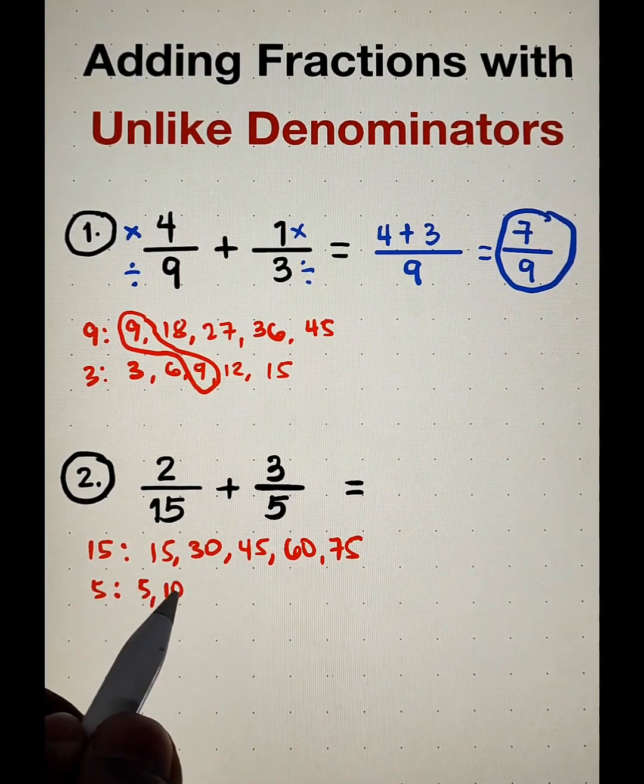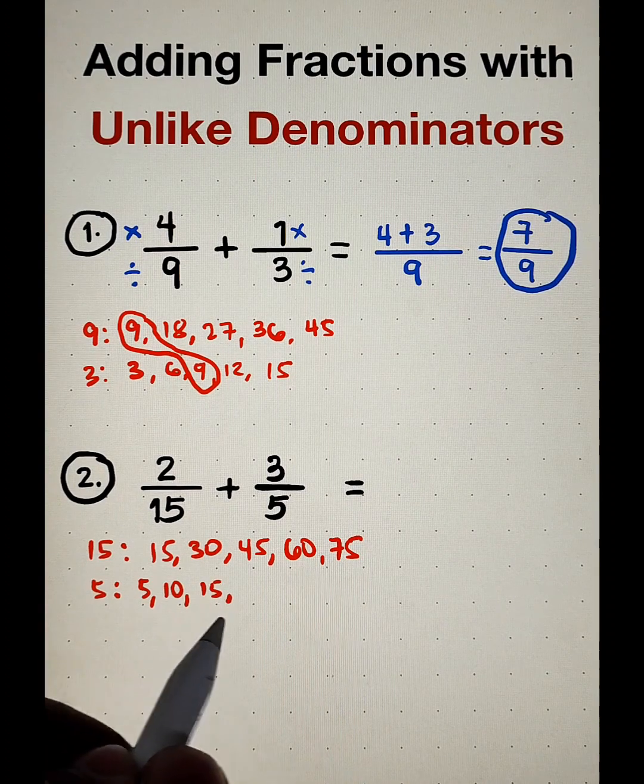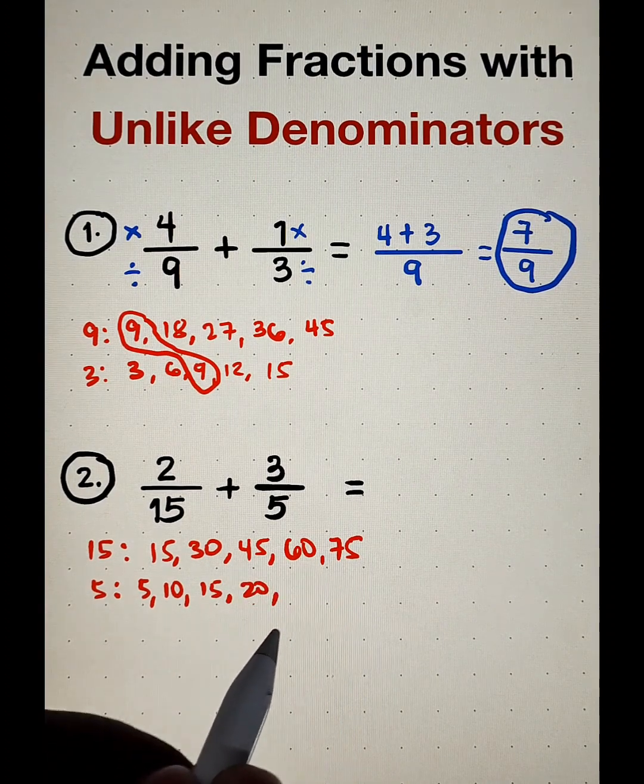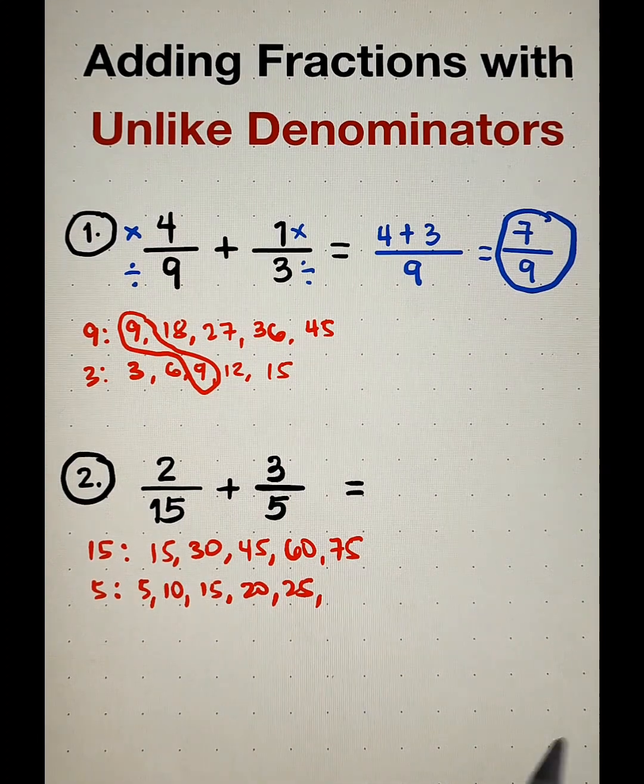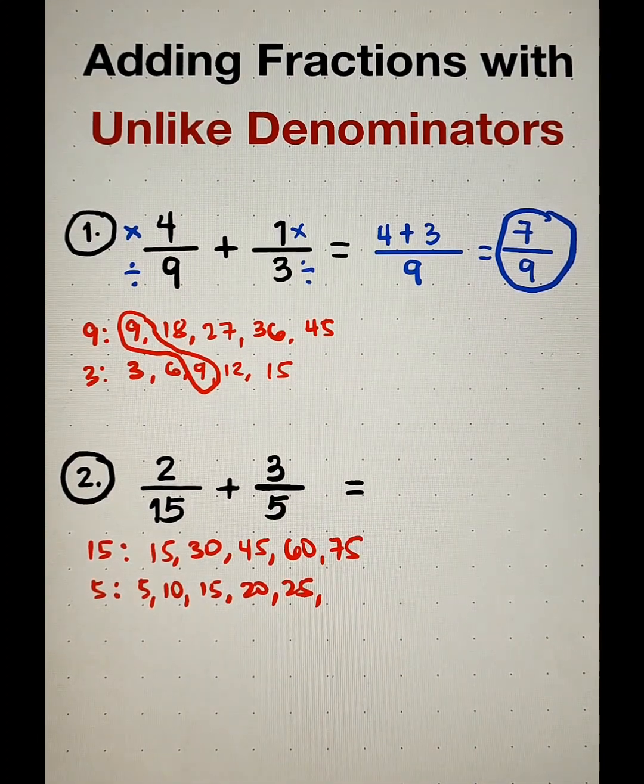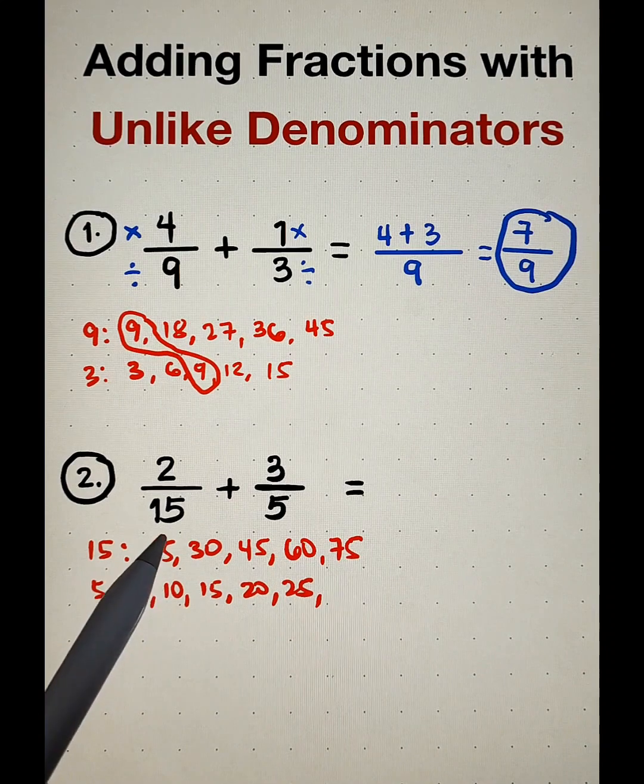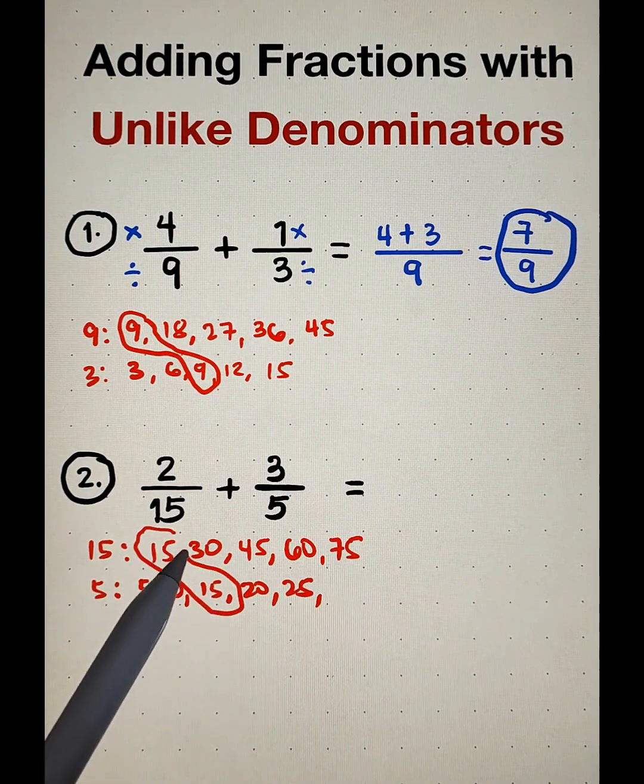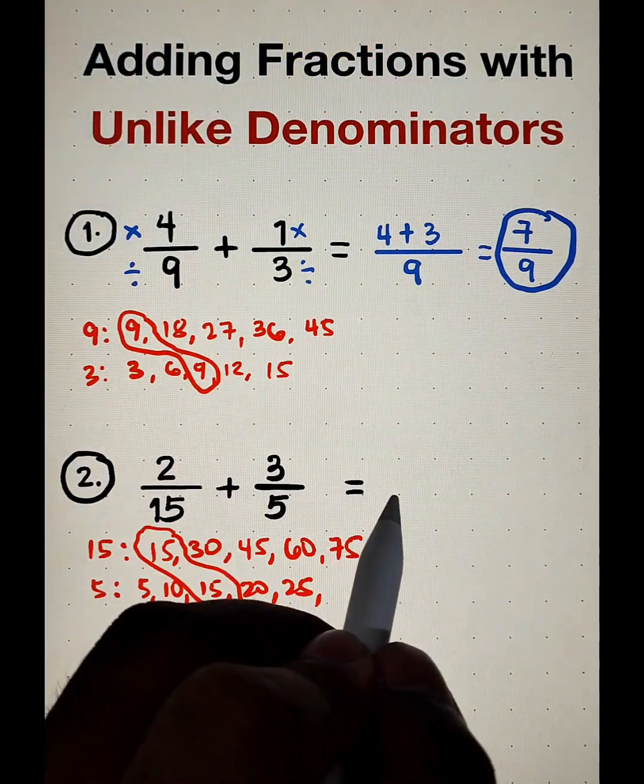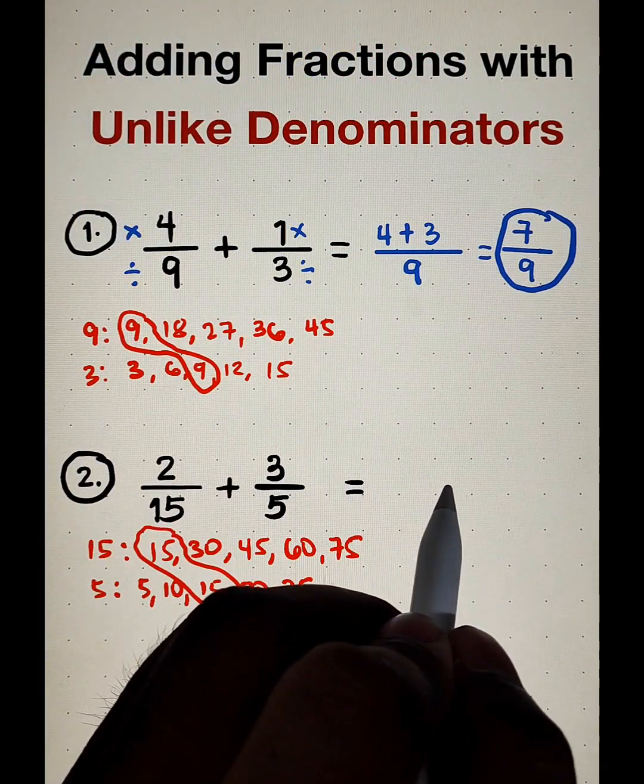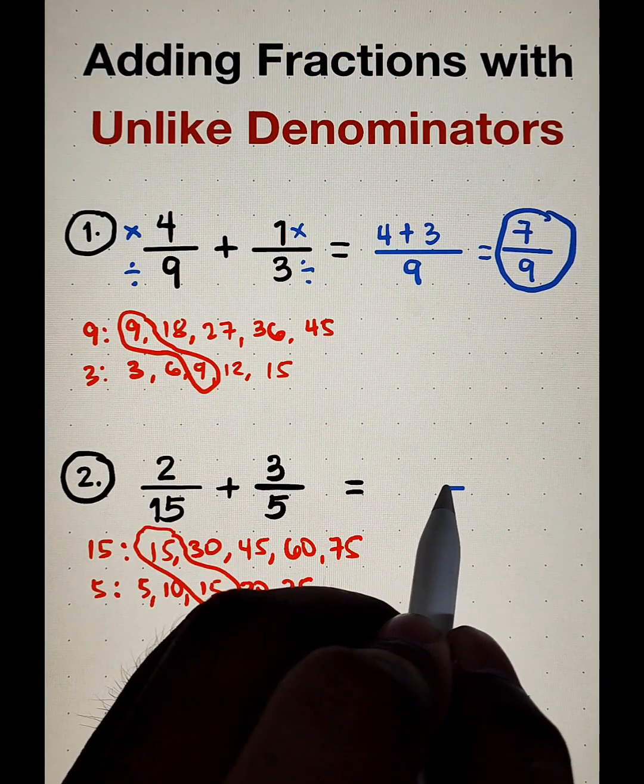5, 10, 15, 20, 25, and so on. In this case, as you can see, we already have the least common multiple, which is equal to 15. Therefore, our LCD is equal to 15. So let us create this line.